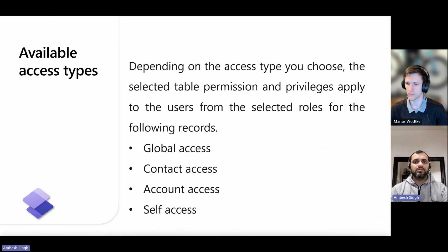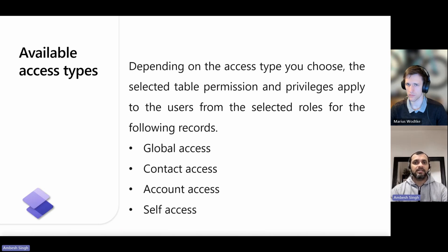The design studio shows four different access types. Depending on the access type you choose, the selected table permission and privileges apply to users from the selected roles for specific records. The first is global access, which applies the selected table permission and privileges to users from the selected role for all records.